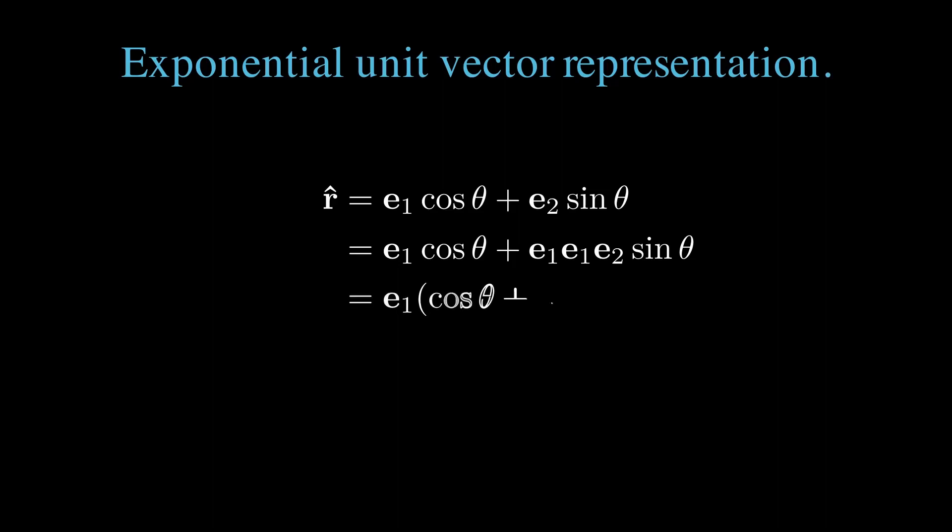We can now factor out the leading e1, leaving an e1 e2 factor for the sine. e1 e2 is what we call our i, leaving e1 times cos theta plus i sine theta. That's just the exponential, so we're left with r hat equals e1 times e to the i theta.